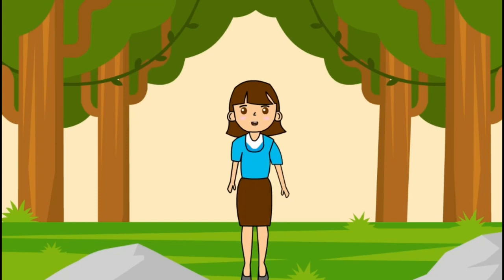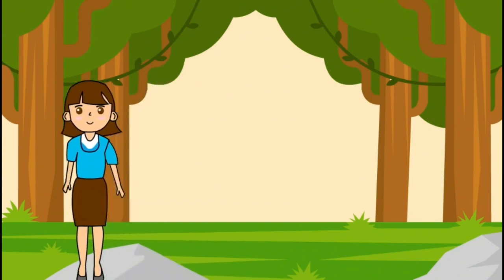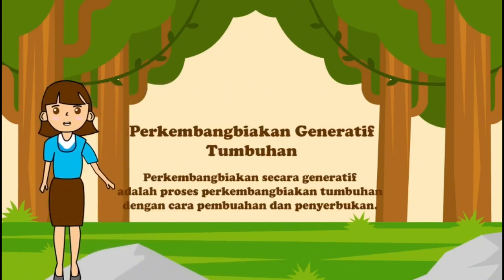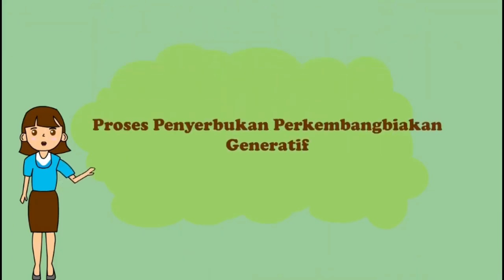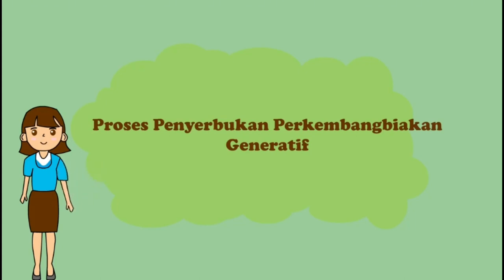Sekarang kita akan memasuki penjelasan perkembangbiakan generatif tumbuhan. Perkembangbiakan secara generatif adalah proses perkembangbiakan tumbuhan dengan cara pembuahan dan penyerbukan. Perkembangbiakan secara generatif pasti dimulai dengan penyerbukan. Penyerbukan adalah proses jatuhnya serbuk sari atau menempel pada kepala putik tanaman.